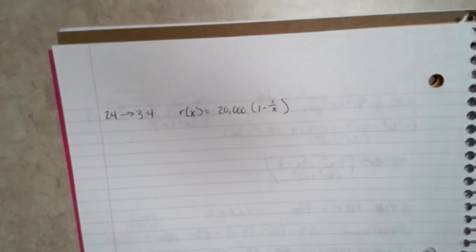My name is Lauren, and I have number 24 on section 3.4. The question asks: suppose that the revenue from selling x washing machines is r(x) = 20,000(1 - 1/x).